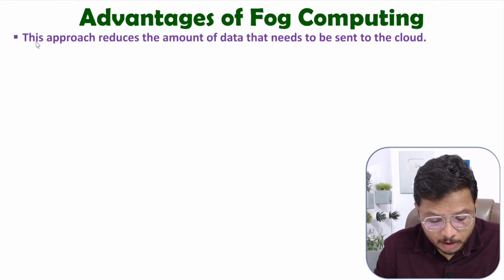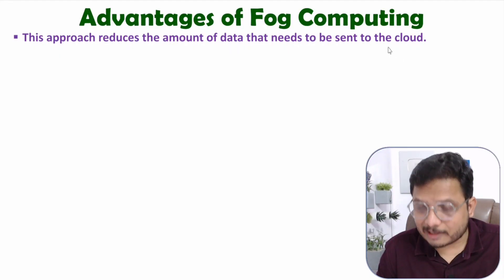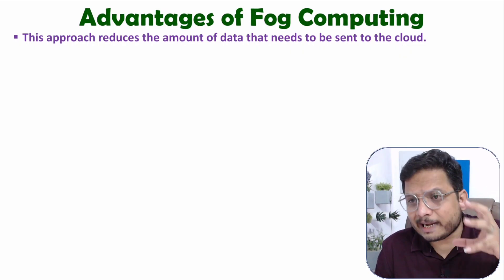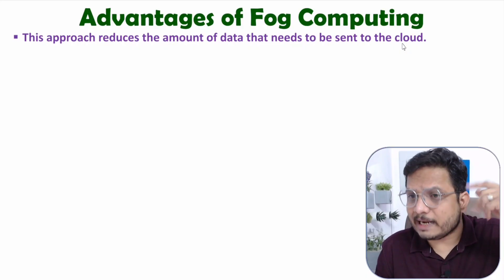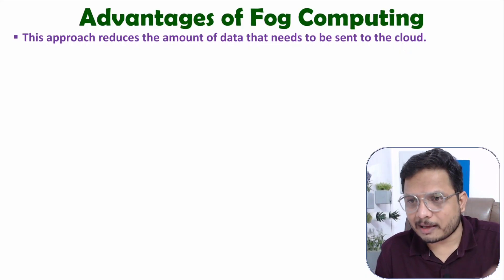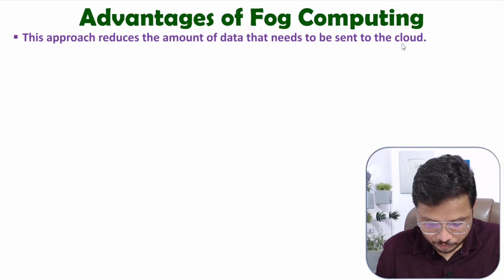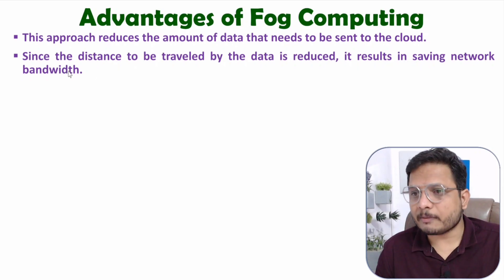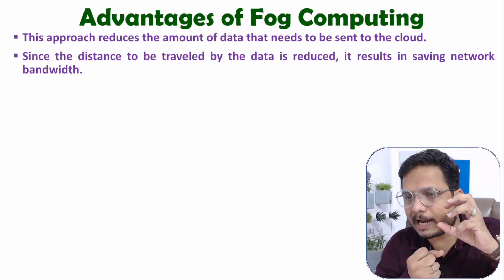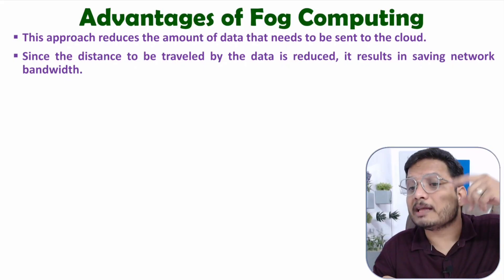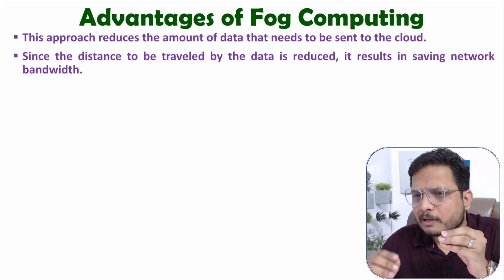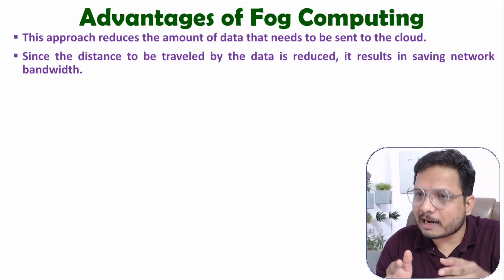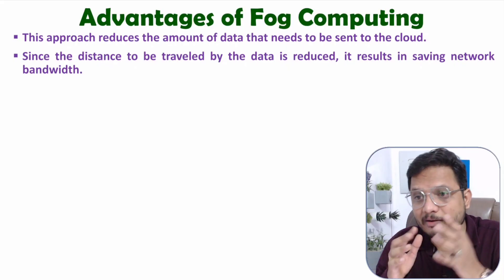Advantages of fog computing: First, it reduces the amount of data that needs to be sent to the cloud — only less frequently used data is sent to the cloud, while frequently accessed data stays in the fog node. Since the distance traveled by data is reduced, it results in saving network bandwidth. The data not used frequently is the only data forwarded to the cloud, so bandwidth is saved automatically.